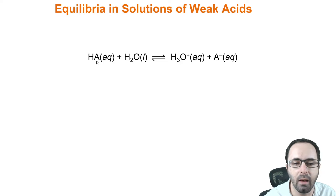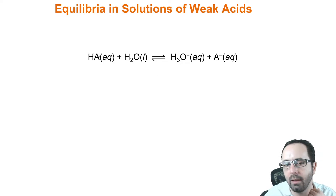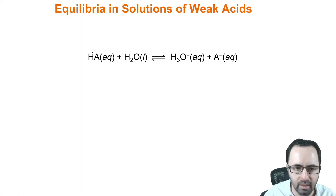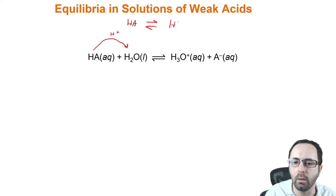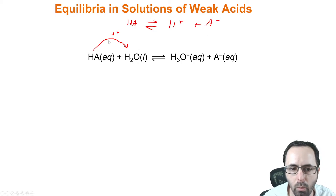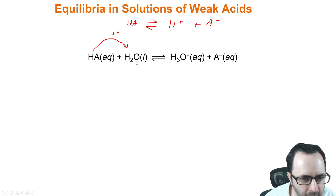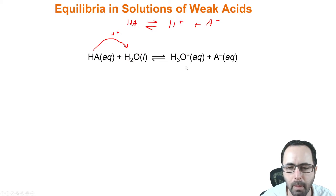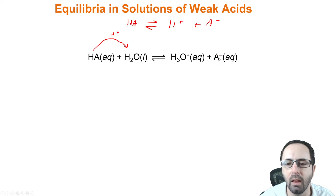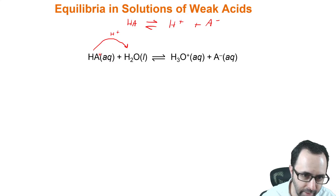Here we have the weak acid, which we'll generally call HA as a kind of generic term. What's happening is that the HA is donating a proton to the water. In these equilibria, you could choose to show the water or not — usually your book does. You can show the water actually getting the H+, and then the water gets the H+ and you have H3O+, hydronium — one more hydrogen, and the charge is up by one from zero up to positive one. What's left over is the conjugate base of the weak acid, A−, because when the H+ leaves, it leaves an electron behind, which leaves that negative charge.